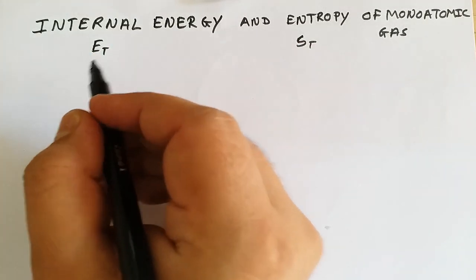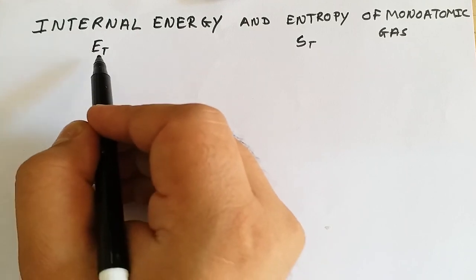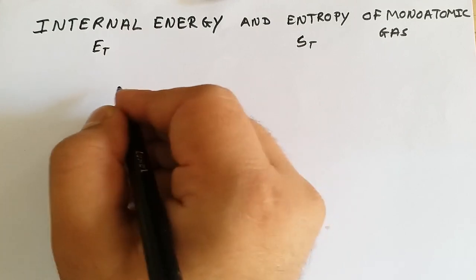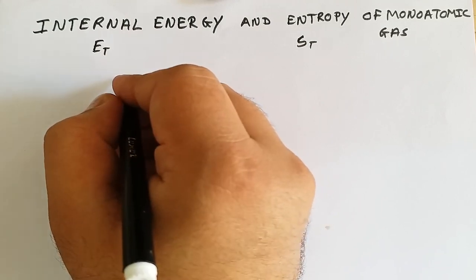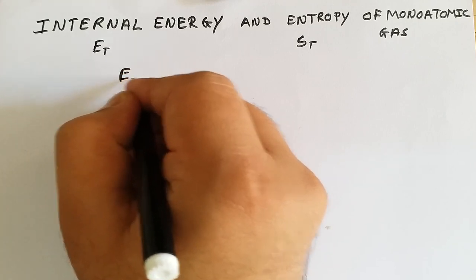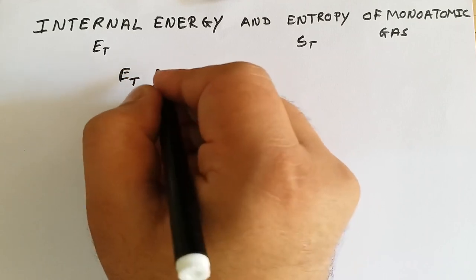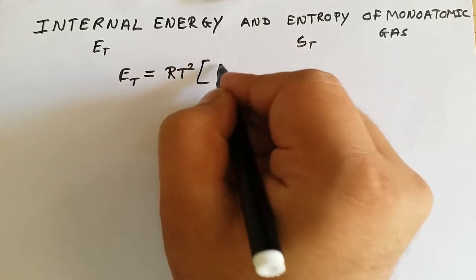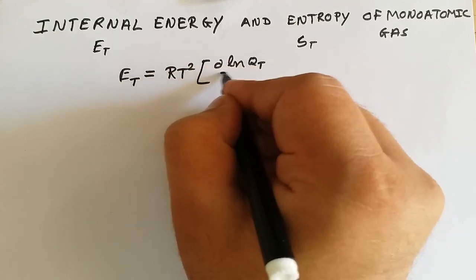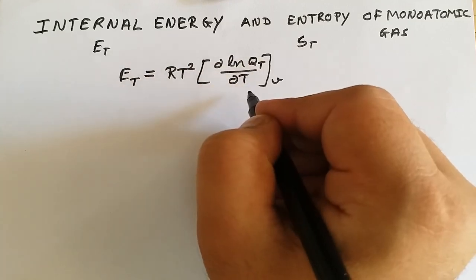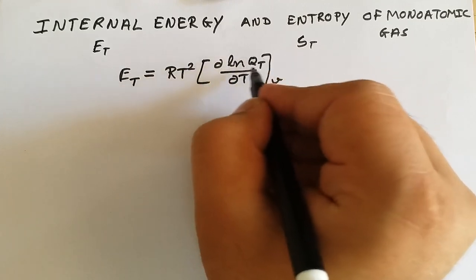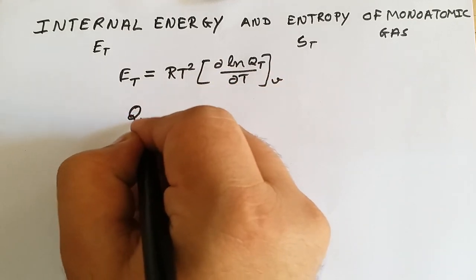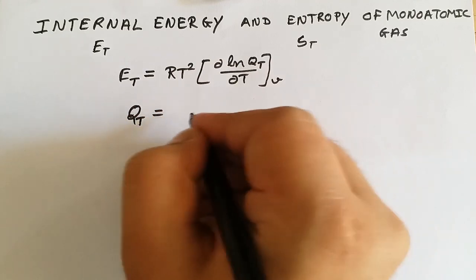We will be finding the relation for translational internal energy and translational entropy. For internal energy in terms of partition function, we have already derived that E_t, the translational energy, is equal to RT² times d(ln q_t)/dT at constant volume, where q_t is our translational partition function.